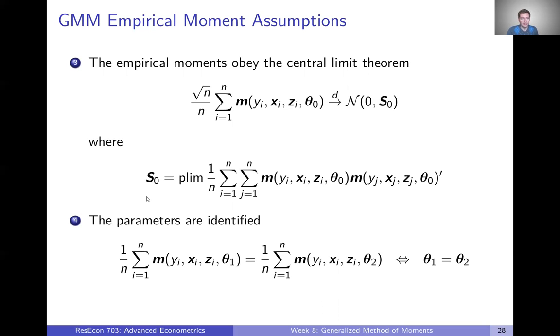So those are three conditions on the empirical moments. The fourth one that's based on the empirical moments says that the parameters must be identified. In other words, if two sets of parameters yield the same sample moments, then those parameters must be equal to one another. If we have two distinct, two unique sets of parameters yielding the same sample moments, then our model will not be identified. We won't be able to find a unique set of parameters if there are multiples out there that could get us to our estimator or to our minimized sample moments.